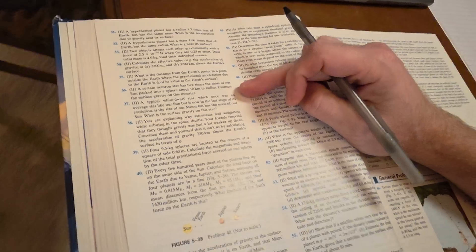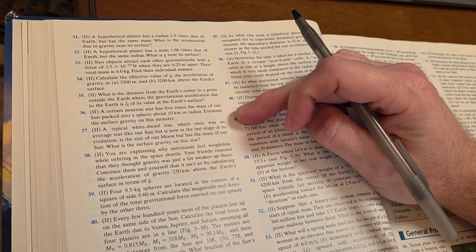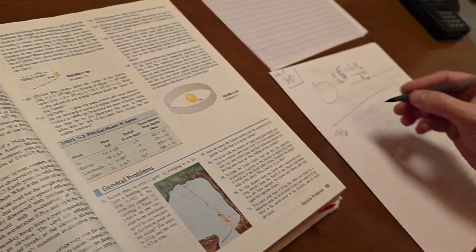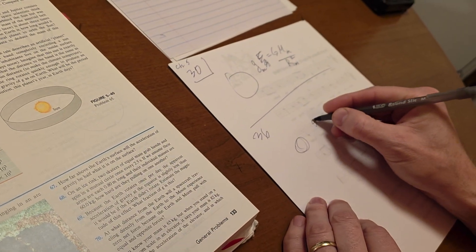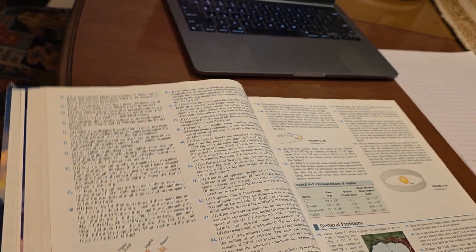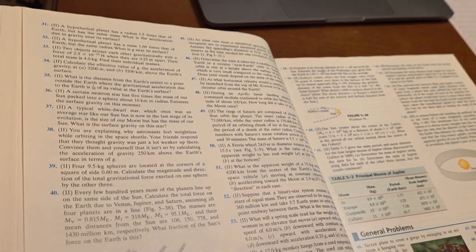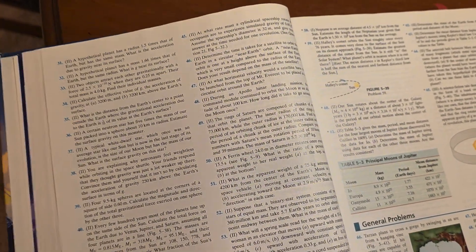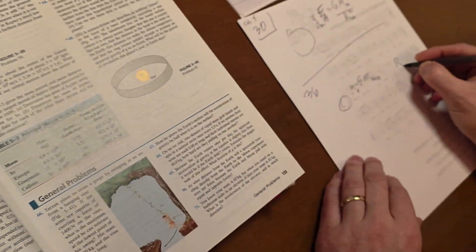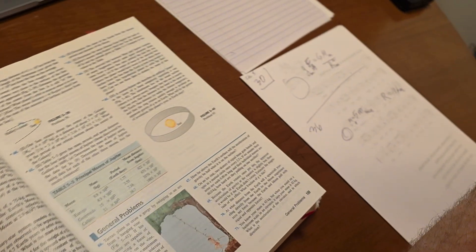Okay, let's take a look what 36 does. 36 says, a certain neutron star has five times the mass of our sun packed into a sphere about 10 kilometers in radius. Estimate the surface gravity on this monster. I remember doing this problem. Okay, so the mass of this neutron star is five times the mass of what? Let me see that again. Mass of our sun. Five times the mass of our sun. Okay, packed into a sphere about 10 kilometers in radius. R is 10 kilometers. All right, so now maybe I'm a little bit stuck. What should I do?